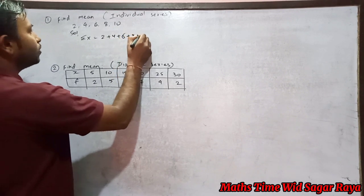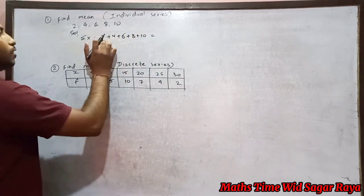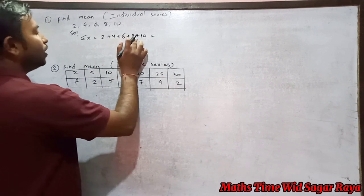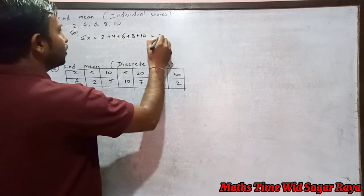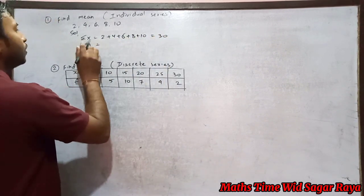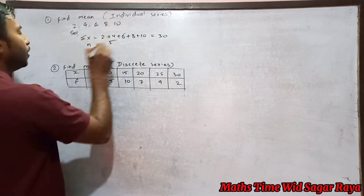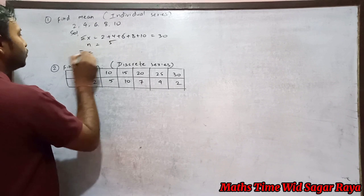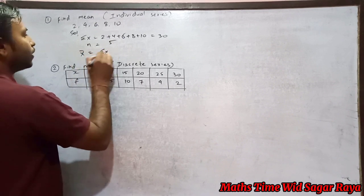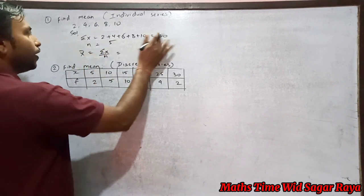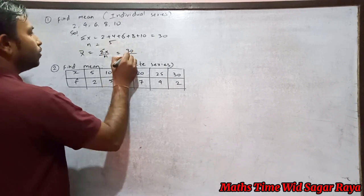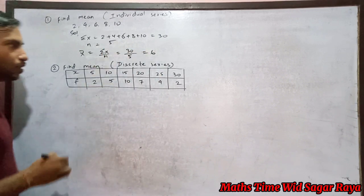6 plus 8 plus 10. It will be 30. How many number of items we have? One, two, three, four, five. So mean equals sigma x by n. Sigma x is 30, so 30 by 5 equals 6. This is the solution for number one.